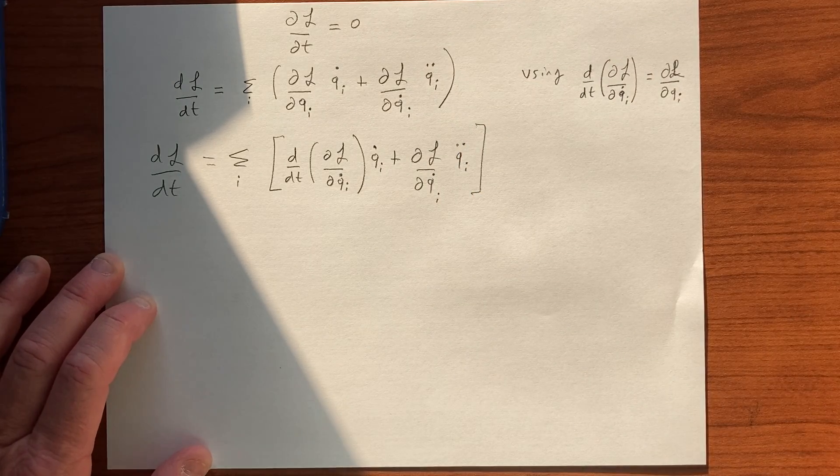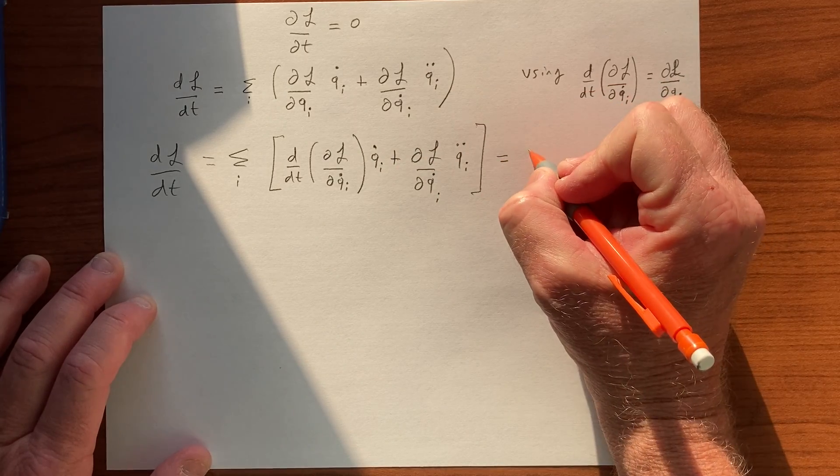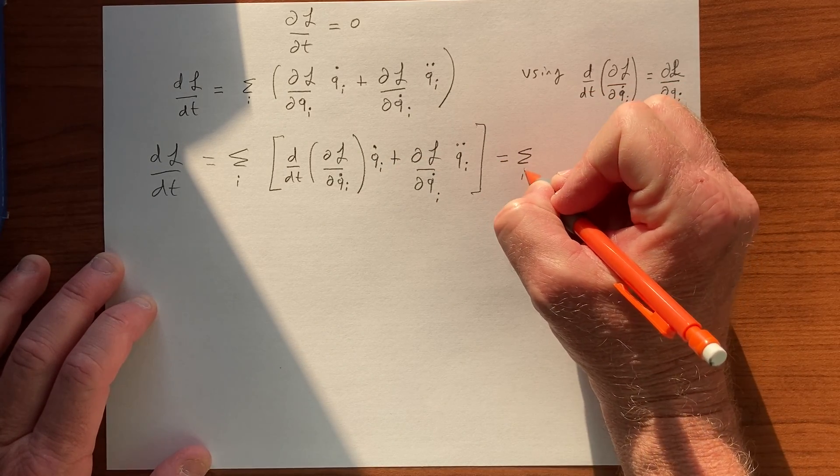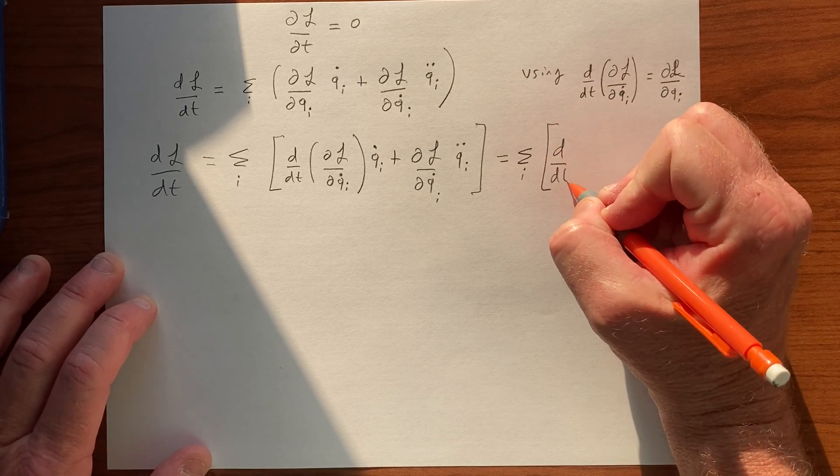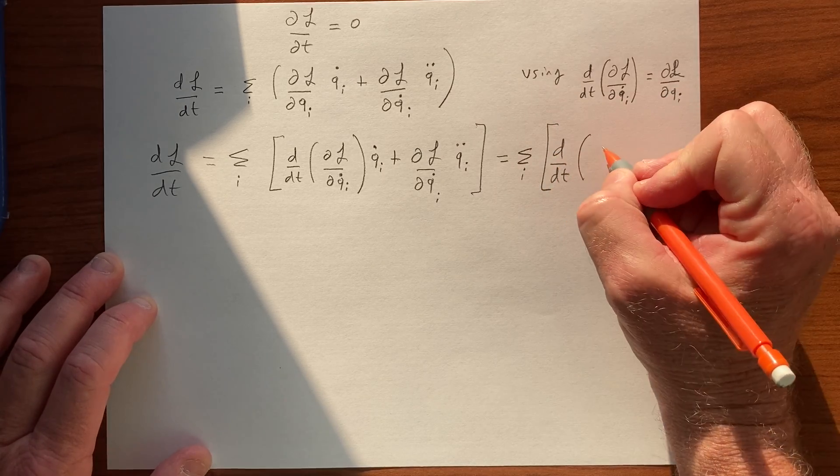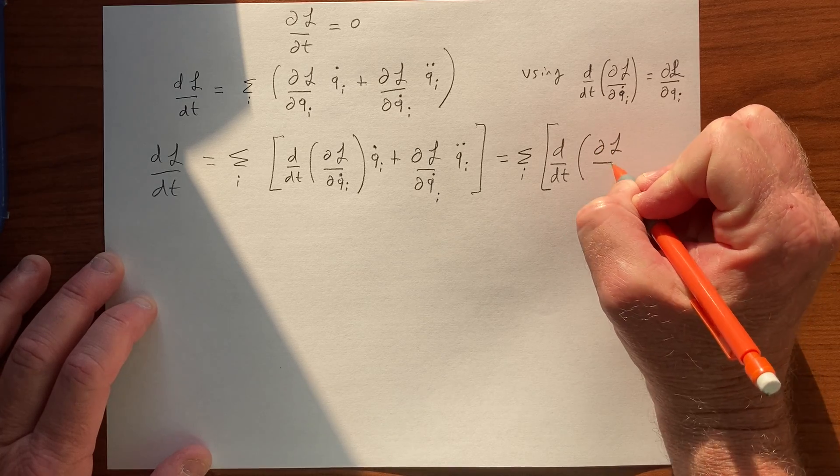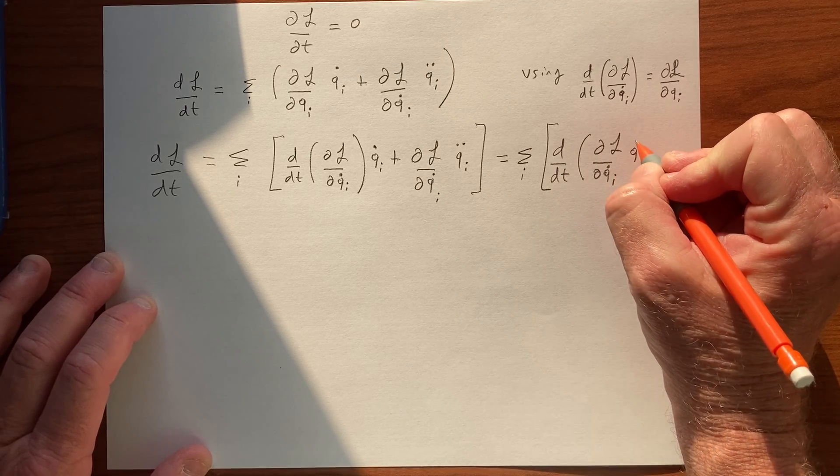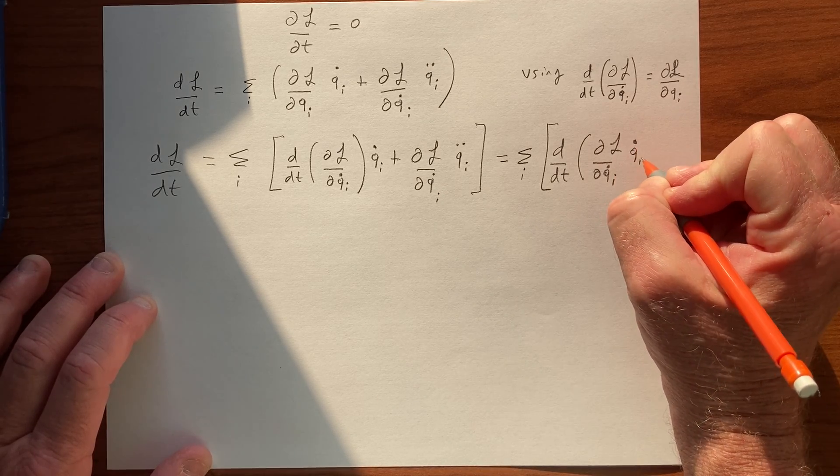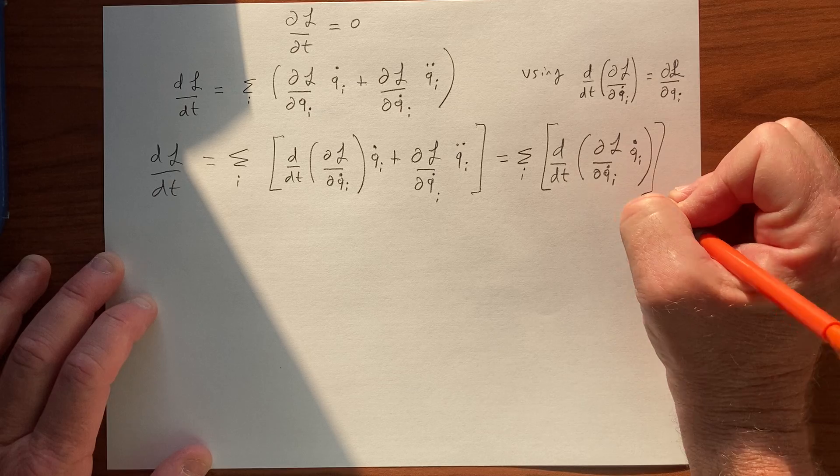But this can be written as one overall term—well, it's the sum of this one overall time derivative: DL by DQ dot i times Q dot, Q dot i.